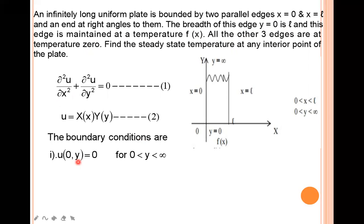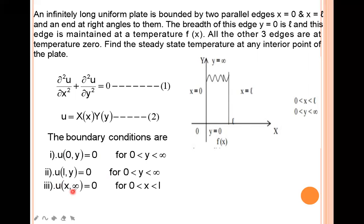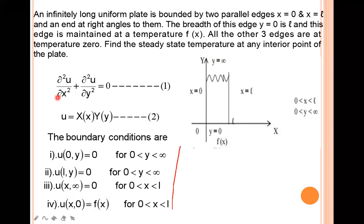That means the boundary conditions are: u(0, y) = 0; u(l, y) = 0, since these two lie on the parallel plates x = 0 and x = l; u(x, ∞) = 0; and only the edge at y = 0 is maintained at temperature f(x), so u(x, 0) = f(x). Using these four conditions we solve the given two-dimensional heat equation.